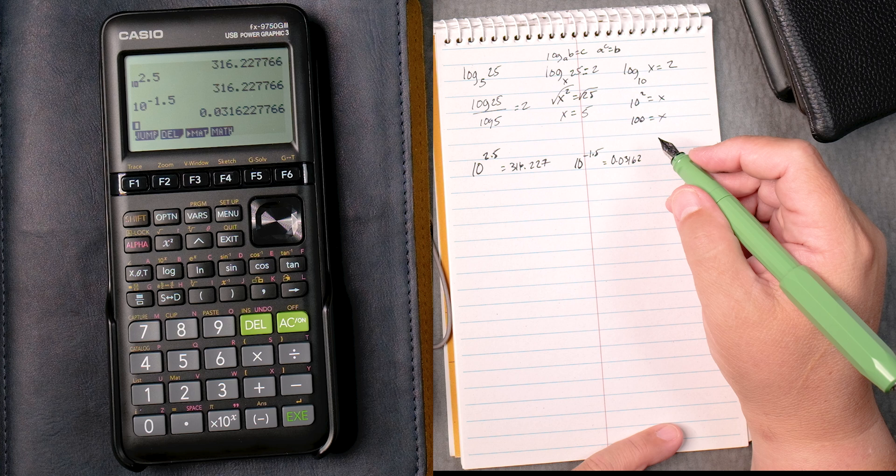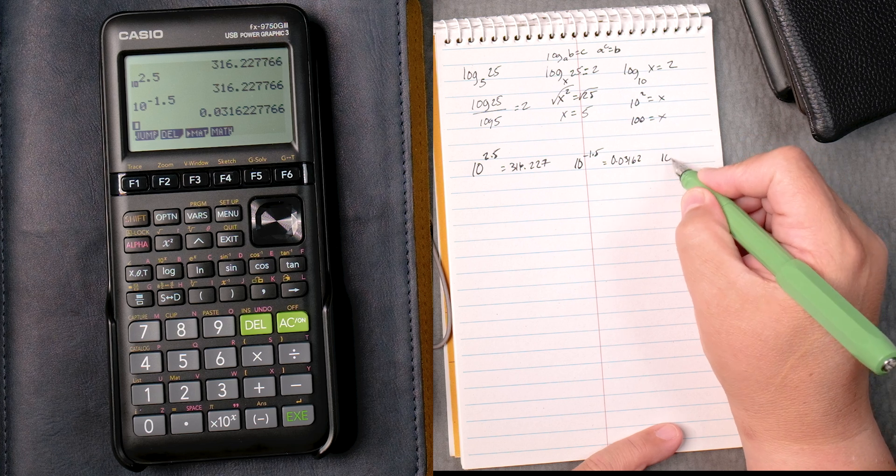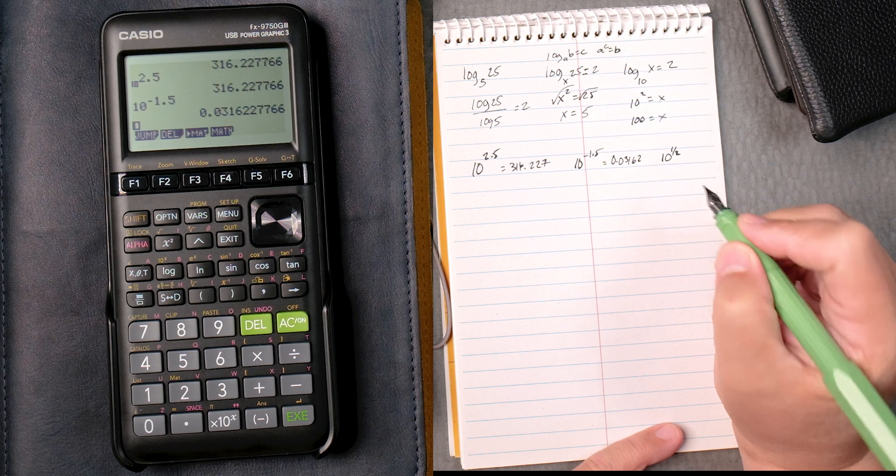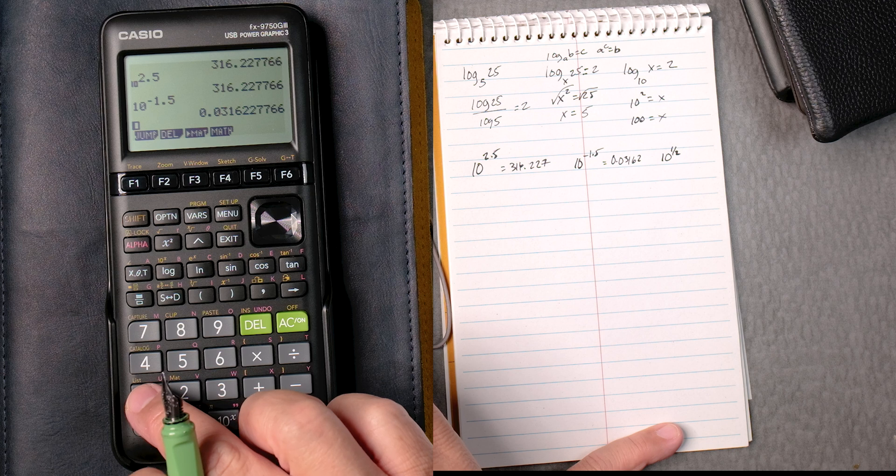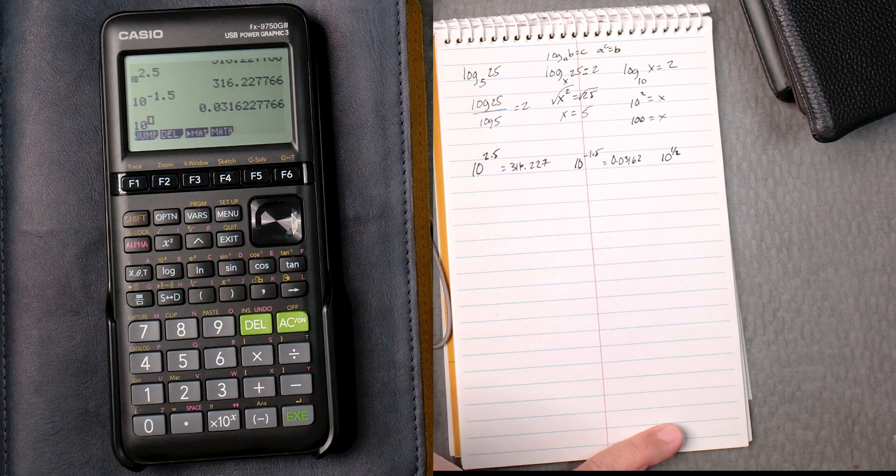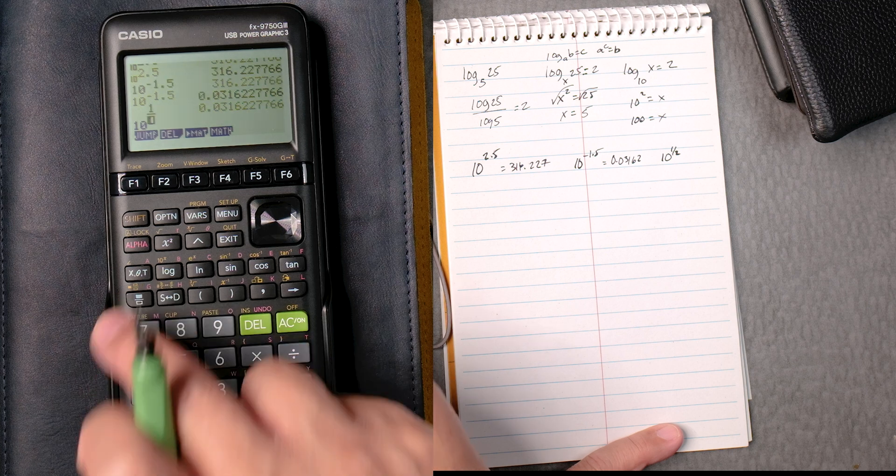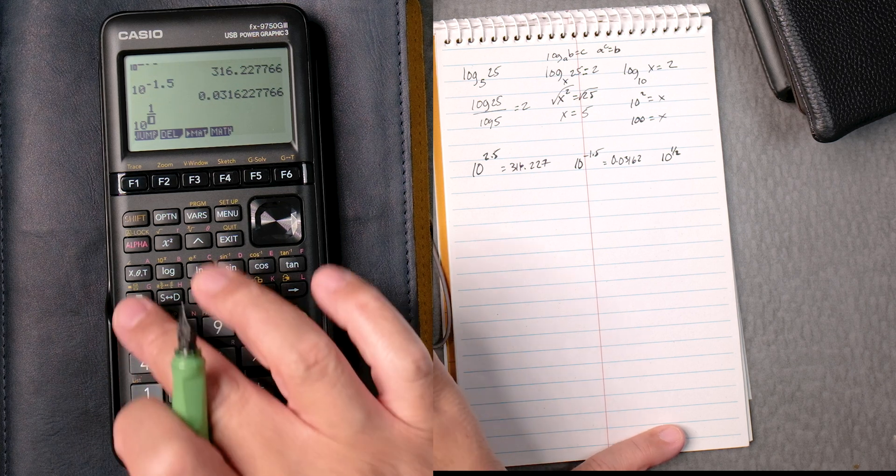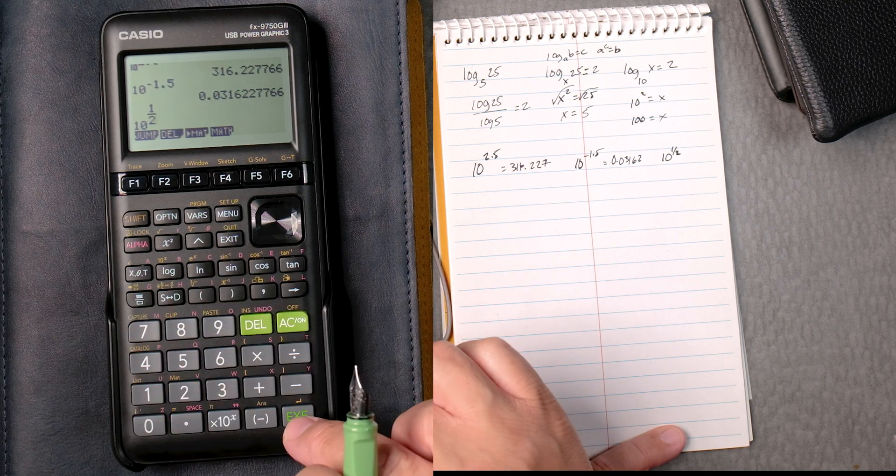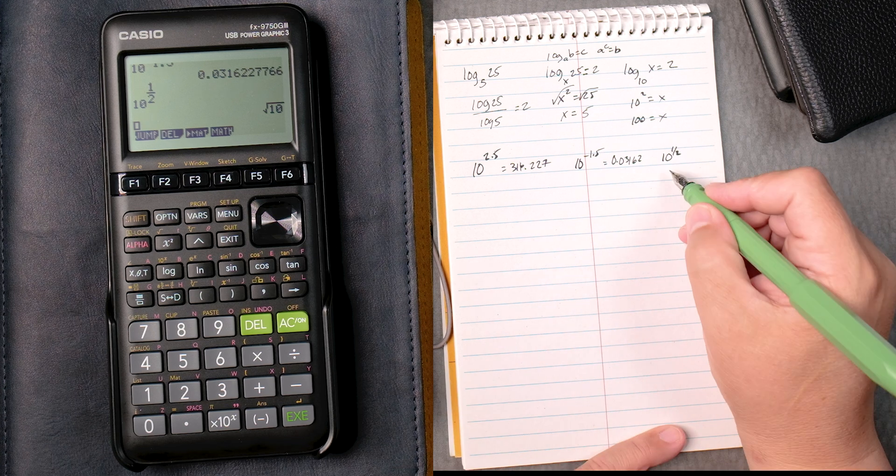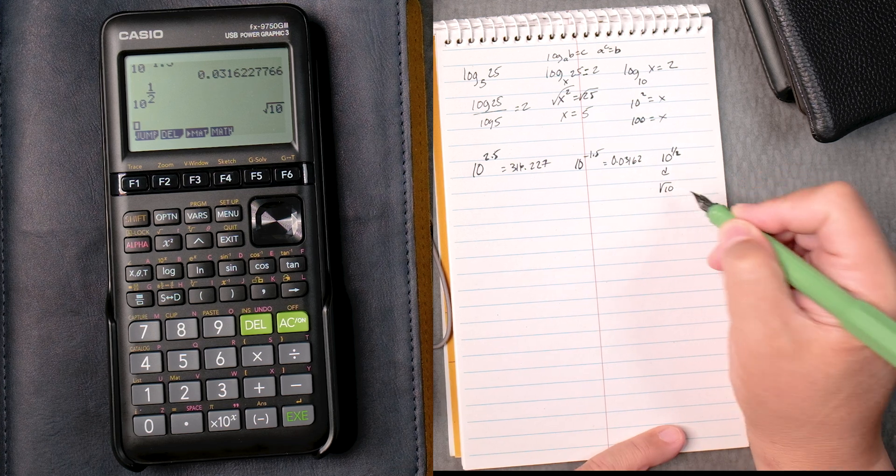10 to the 2, and then 10 to the 1.5, let's see what it does there. We can say 10, carat, 1, then the division or the fraction button, then 2, execute, and it gives you the square root of 10.